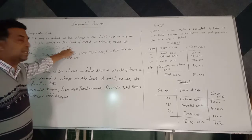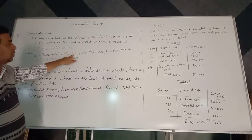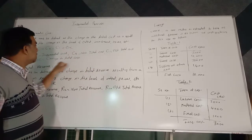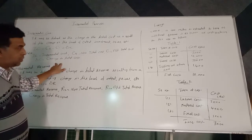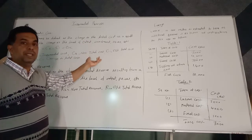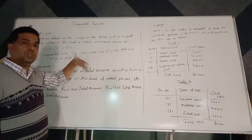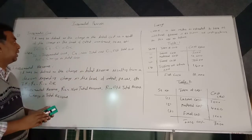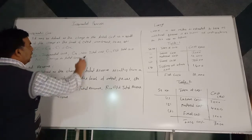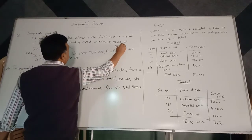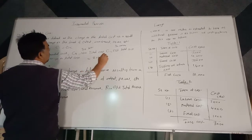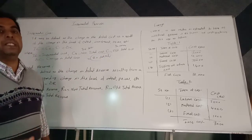The formula for incremental cost is: IC = C2 − C1, also written as ΔC. Here, IC is incremental cost, C2 is the new total cost, and C1 is the old total cost. For example, suppose output increases and the old cost was 50 lakhs and the new cost is 70 lakhs, so the change in total cost — the incremental cost — is 20 lakhs.